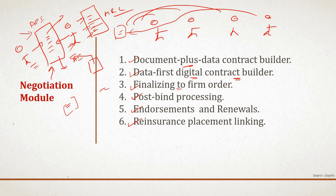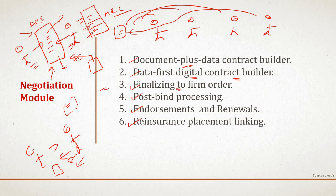Finalizing to firm order: once the broker has reviewed the quote, identified the market and negotiated terms and conditions, it will submit a firm order. The underwriter submits the quote; the broker evaluates it and sends a series of firm orders to underwriters or syndicates. The platform tightly controls data access so each underwriter sees only information relevant to them. The underwriter reviews the firm order and decides whether to accept, reject, or accept with additional terms and conditions. Any additional conditions must be agreed before the order can be bound, and the platform manages all workflow and audit trails throughout.